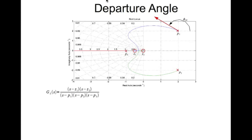The complementary situation to this is the arrival angle. The arrival angle occurs when you have complex zeros. The arrival angle is the angle that the tangent to the root locus makes at a complex zero.